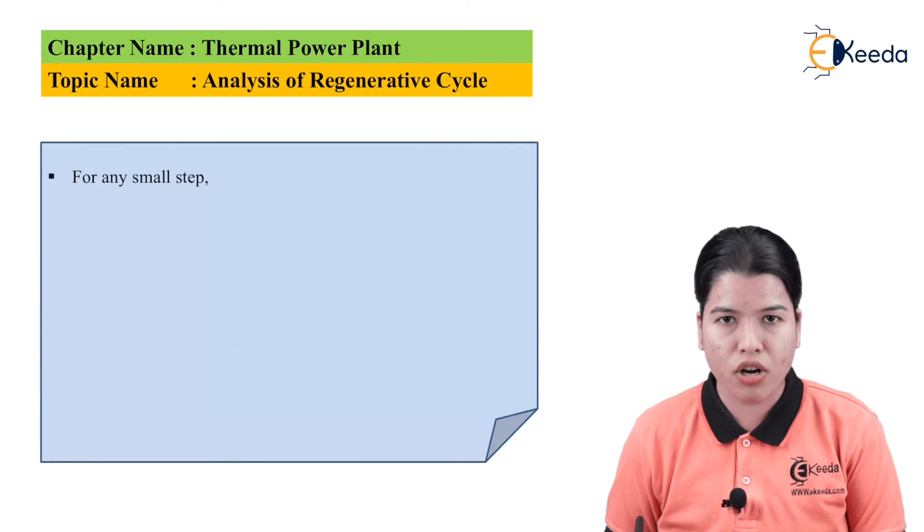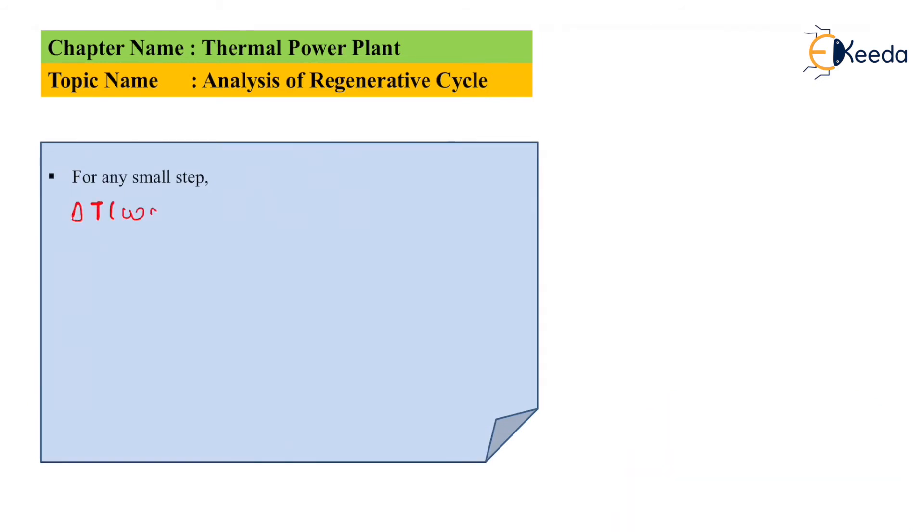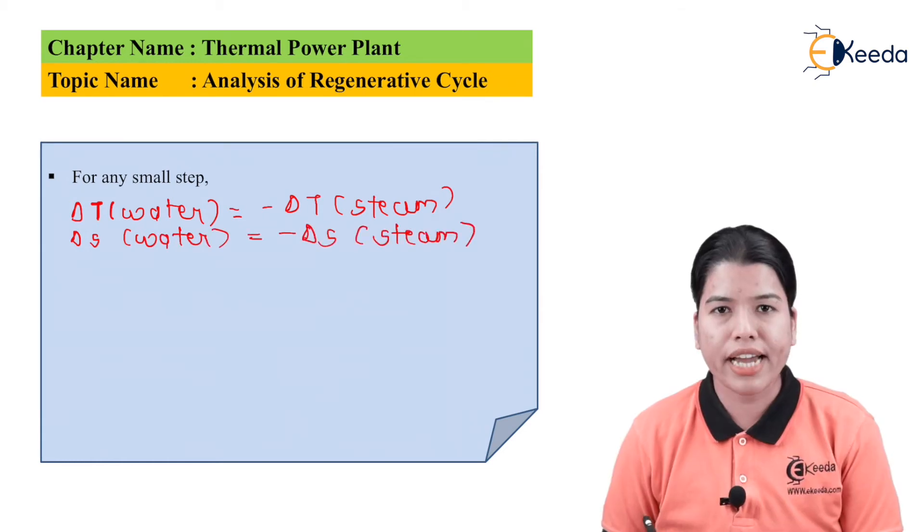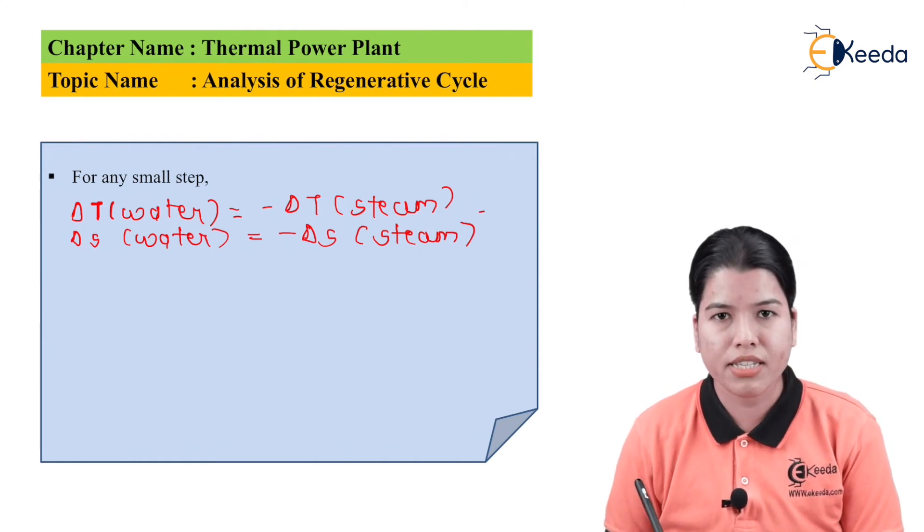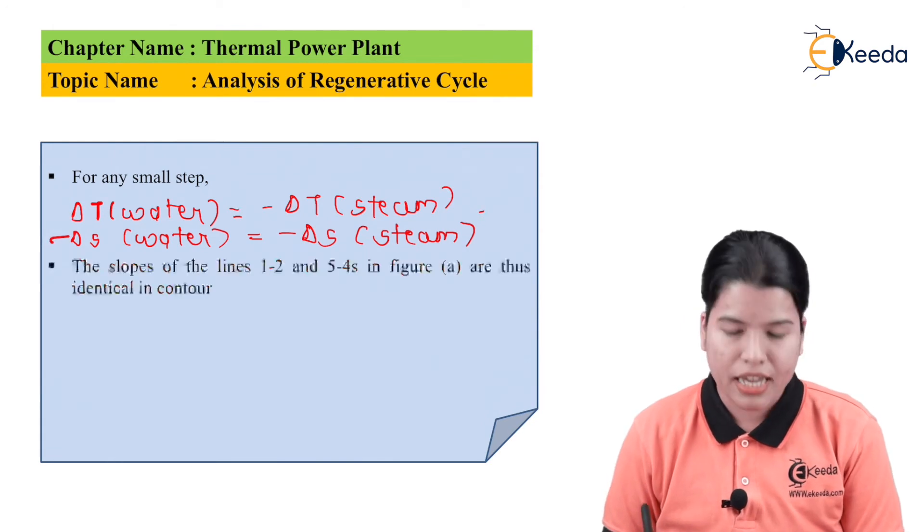Now, if we consider for a small step, we can write delta T_water equals minus delta T_steam. Similarly, delta S_water equals minus delta S_steam. Here T is temperature whereas S is entropy.